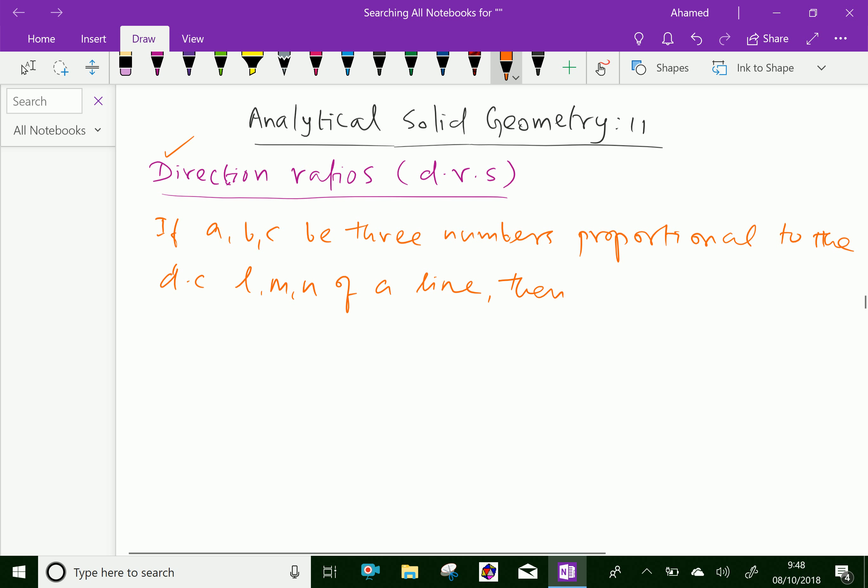Direction ratios of the line. We can say it is D.R.S. of the given line, which means if A, B, C be three numbers proportional to the direction cosine L, M, N of a line.